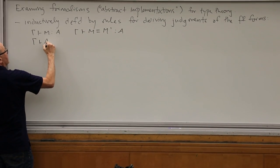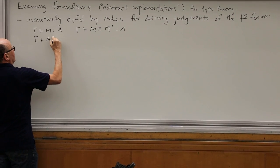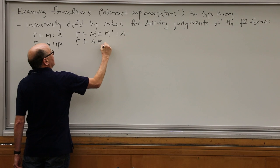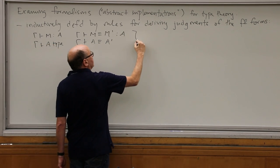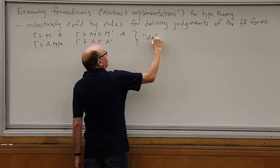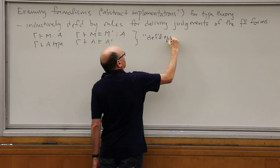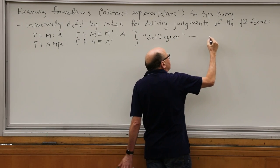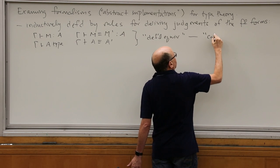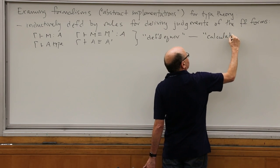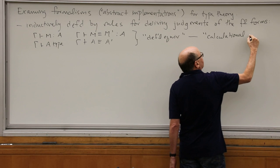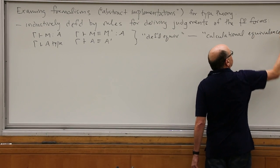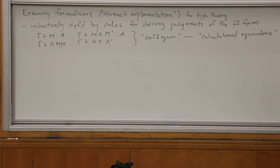I kind of write definitional equality first because I feel like it's the primary one. The ones on this side are called definitional equivalences — or you could say calculational equivalences, equivalence by virtue of calculation. As an example, to remind us of what we would do: a possible criterion is that these be decidable, but I'll get to that in a minute.